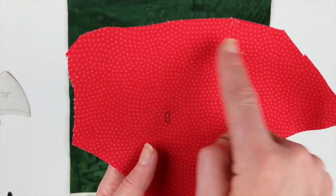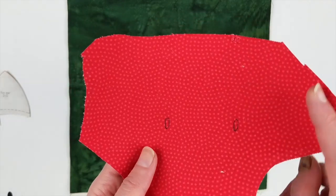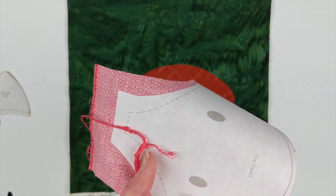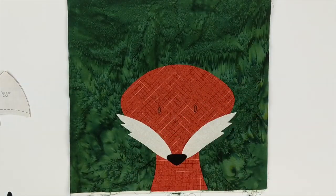So you want to make sure to do that tracing before you peel off the paper backing because once you peel off the paper backing, you can't see where those eyes go anymore.